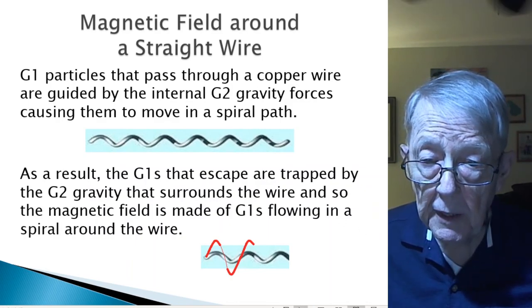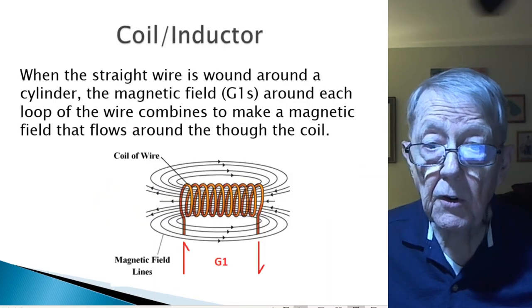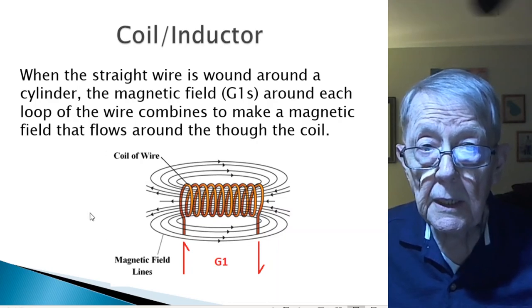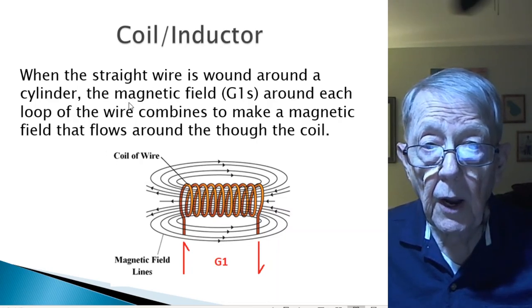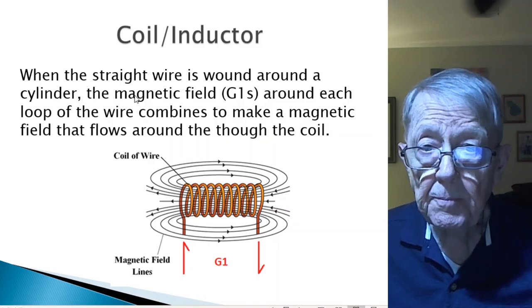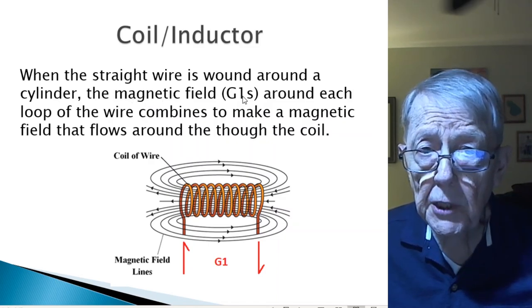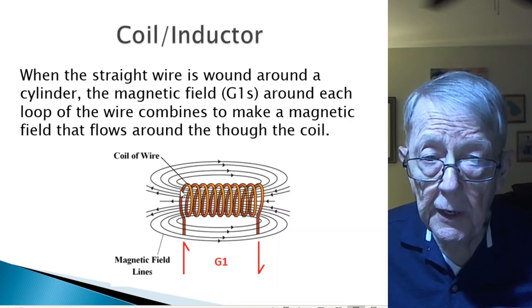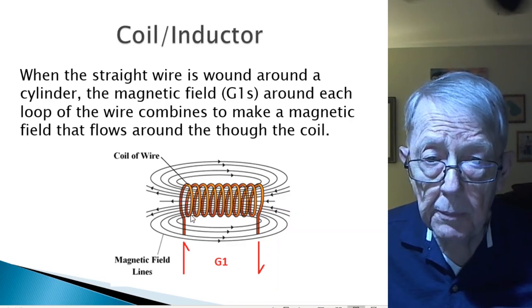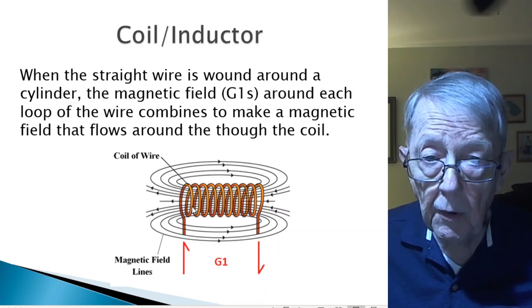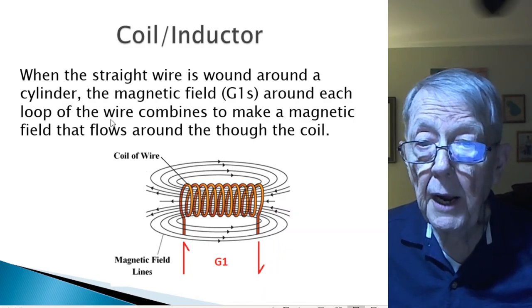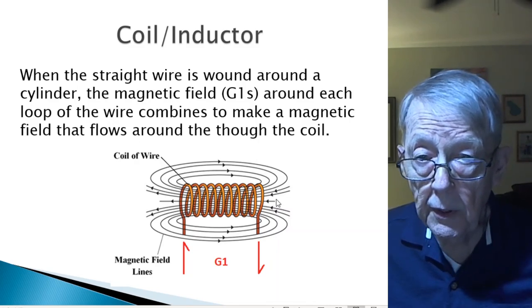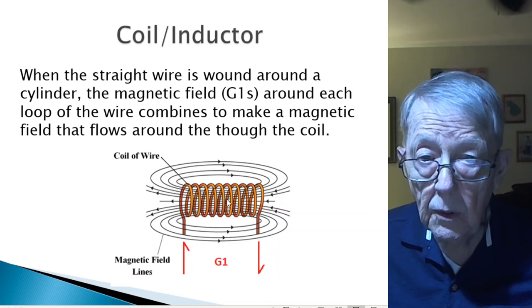So that's the magnetic field and an inductor, of course, has a magnetic field. You take that same wire and you can coil it around a cylinder. The magnetic field runs around each loop of the wire.